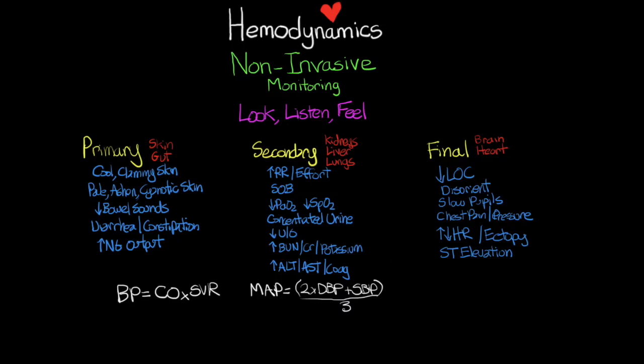The last concept I want to talk about is pulse pressure. Pulse pressure is a simple equation where we take our systolic blood pressure and subtract our diastolic blood pressure. The whole point of pulse pressure is to tell us how wide or how narrow the difference is between our systolic and diastolic pressures. This will come in useful when determining what is going on with your patients — whether they have a very wide, very narrow, widening, or narrowing pulse pressure. That will conclude this lesson on hemodynamics and non-invasive monitoring. In our next lesson, we're going to take a look at invasive monitoring.